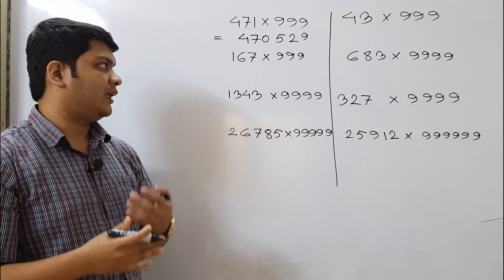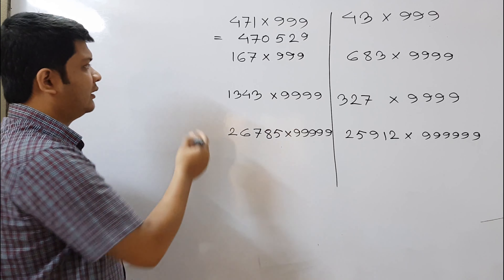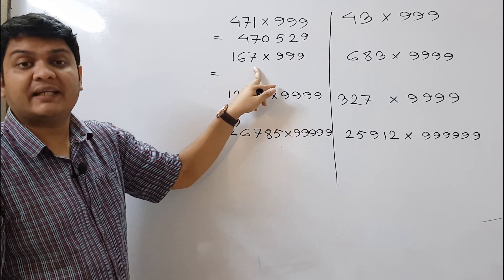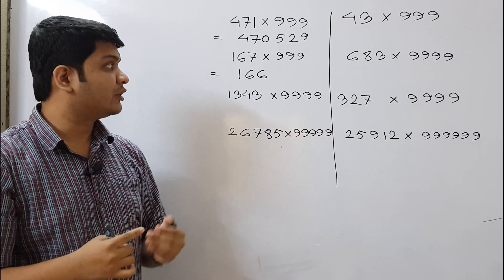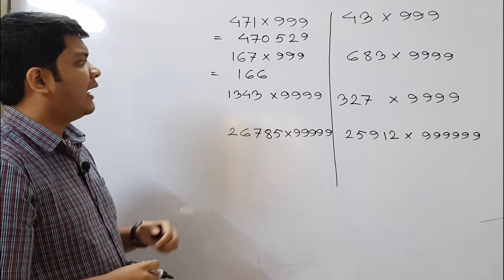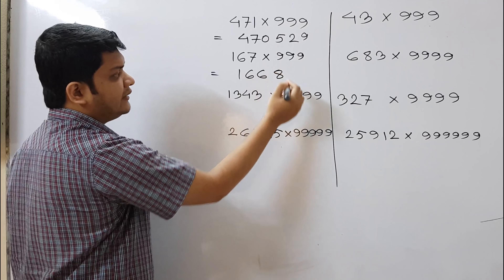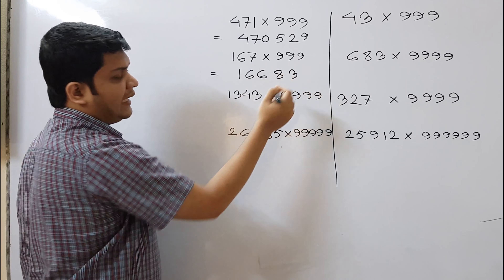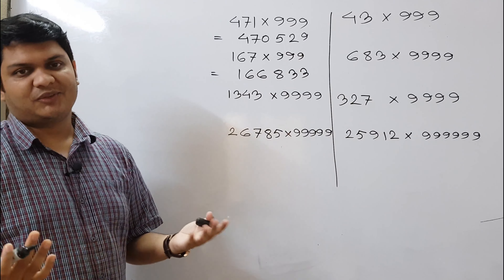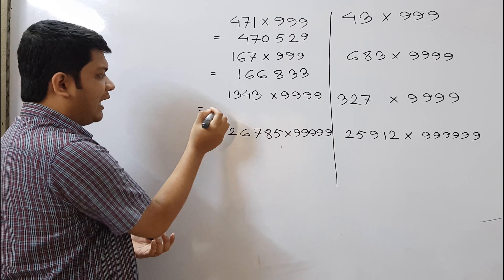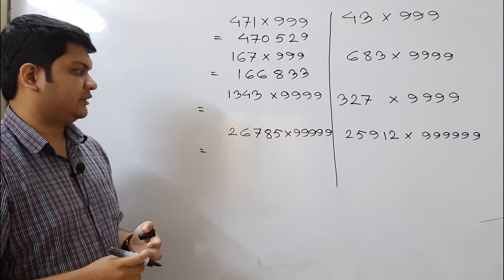Let's try more examples. For 167 × 999: first write 166 (one less than the multiplicand), then subtract from 999 — 9 minus 1 is 8, 9 minus 6 is 3, 9 minus 6 is 3. So the result is 166 | 833. I hope you can now solve the bigger examples on the board as well.